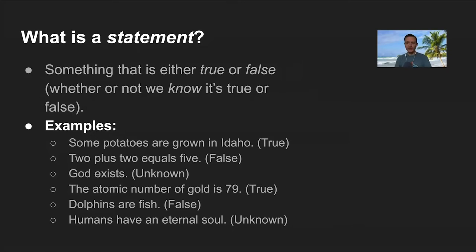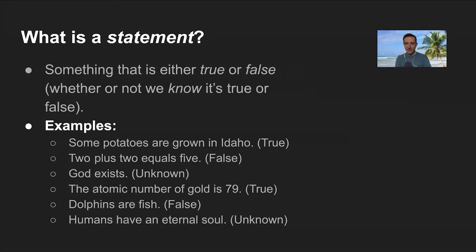The atomic number of gold is 79 — that happens to be true, and it's a statement because it has a truth value. Dolphins are fish — that's false; dolphins are mammals, but it's a statement with a truth value of false. Humans have an eternal soul — presumably we don't know whether that's true or false, but it is either true or false, so it's still a statement with an unknown truth value.